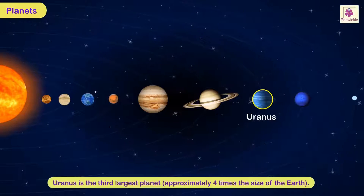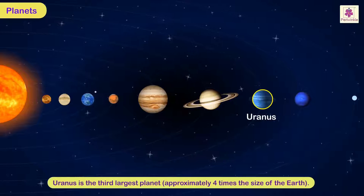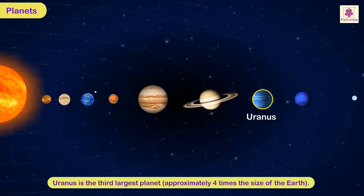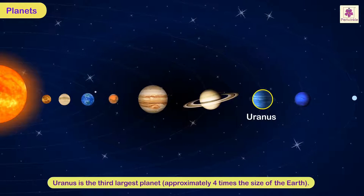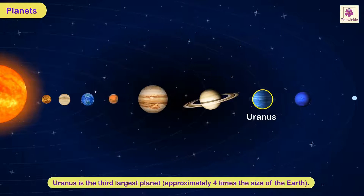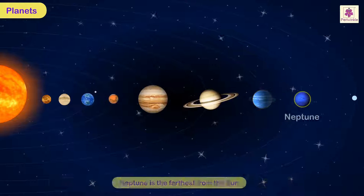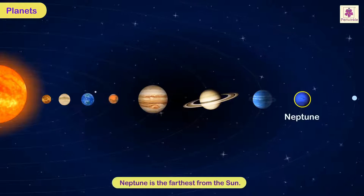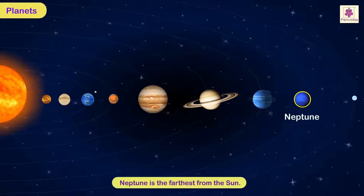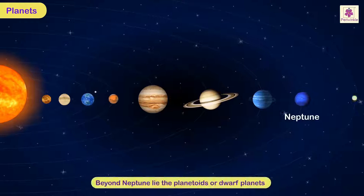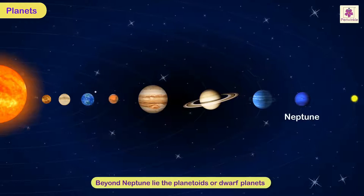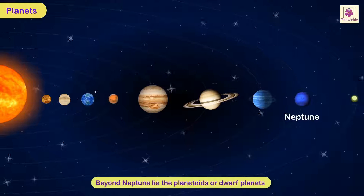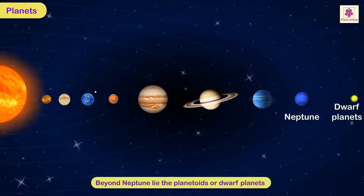Uranus is the third largest planet, approximately four times the size of the Earth. Neptune is the farthest from the Sun. Beyond Neptune lie the planetoids or dwarf planets.